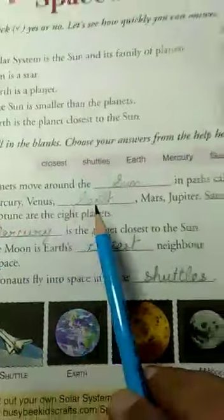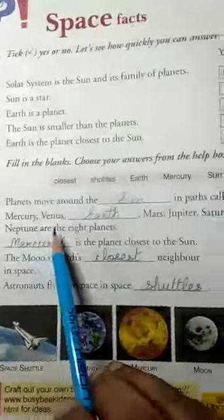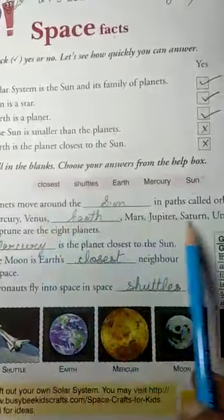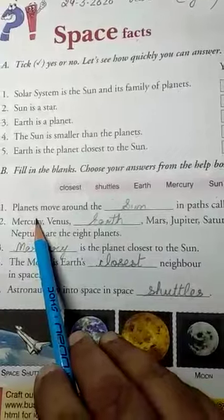Number two: Mercury, Venus, Earth, Mars, Jupiter, Saturn, Uranus and Neptune are the eight planets. They are arranged in this order only. The planet which is closest to the sun is Mercury.